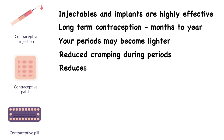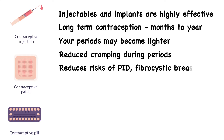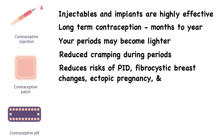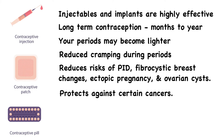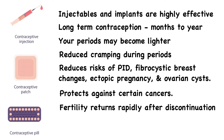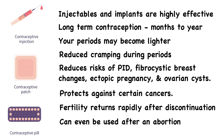Hormonal contraceptives reduce several health risks, such as the risk of pelvic inflammatory disease, fibrocystic breast changes, ectopic pregnancy, and ovarian cysts. They may also protect against certain cancers, including ovarian cancer and endometrial cancer. Fertility returns rapidly once their use is discontinued, and they can even be used after an abortion.